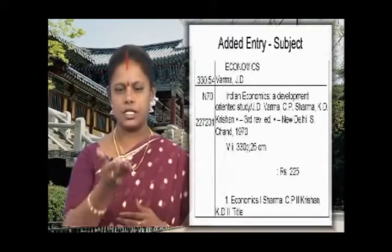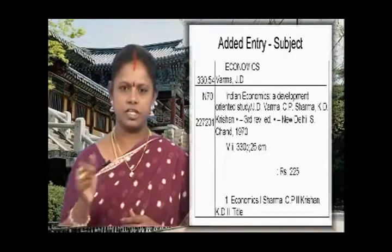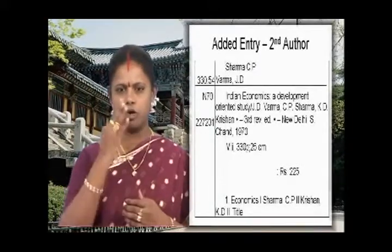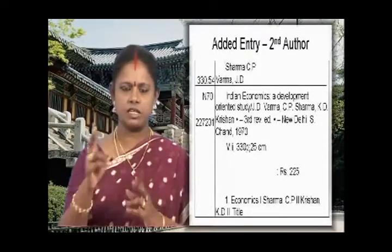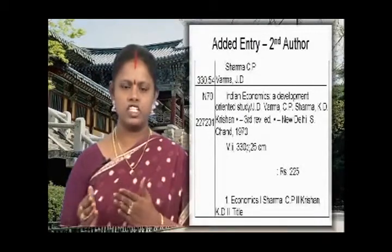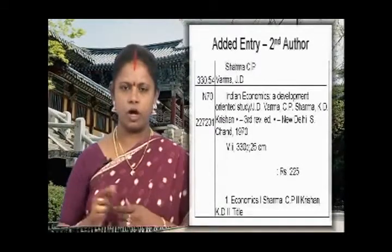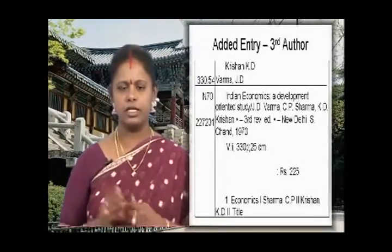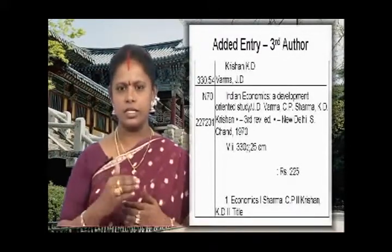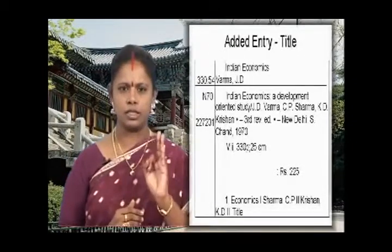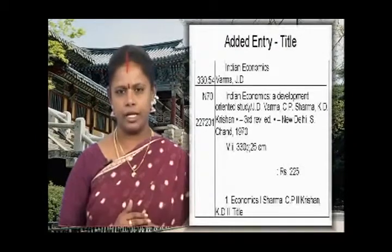The rest of the paragraphs follow the same procedure as the first exercise. In the tracing section, the subject is economics (number 330), so 1 stands for economics. Since there are three authors, we prepare added entries for the remaining two authors: Roman numeral I for the second author and Roman numeral II for the third author. Then a title card, as there are no collaborators or series. In total, four added entries: one subject card, two author cards, and one title card.